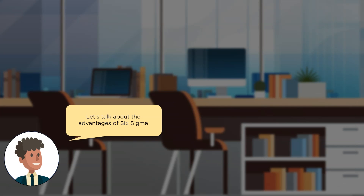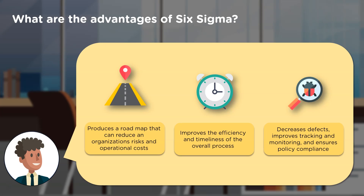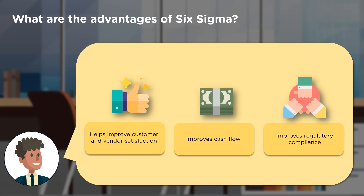Now let's talk about the advantages of Six Sigma. It can help produce a roadmap through which you can find and reduce organizational risk and operational costs. It helps improve the efficiency of the process and ensures it works in a timely manner. It decreases defects, improves overall tracking and monitoring, and ensures products are aligned with company policies. It also greatly helps improve customer and vendor satisfaction, improves cash flow, and ensures products comply with organizational regulations.